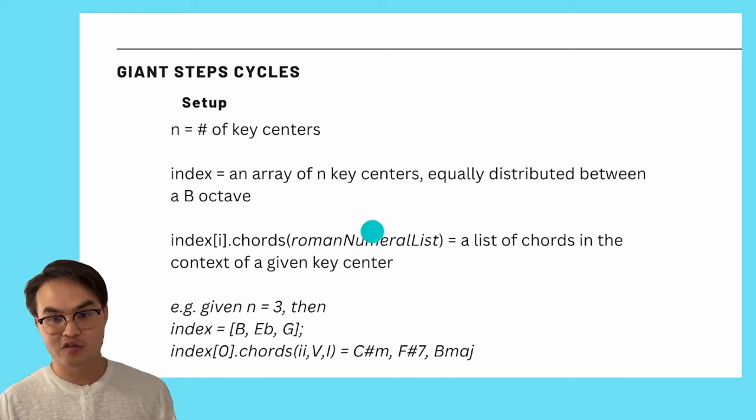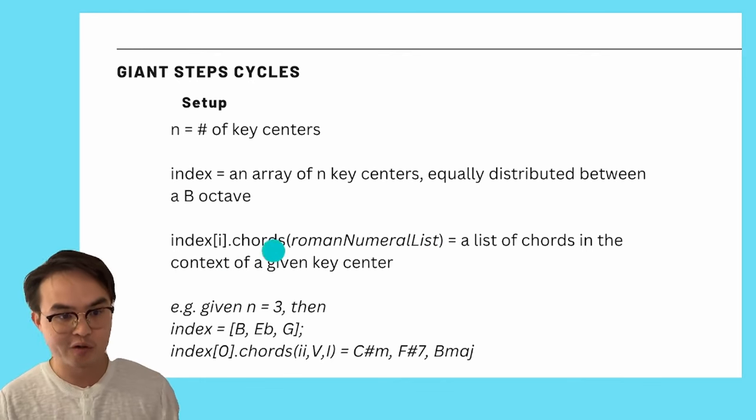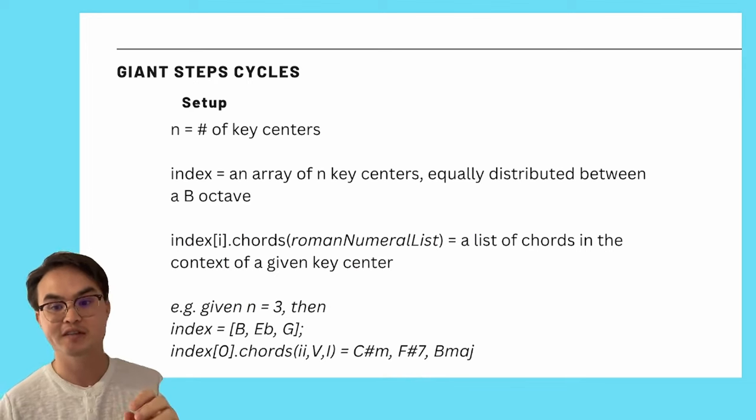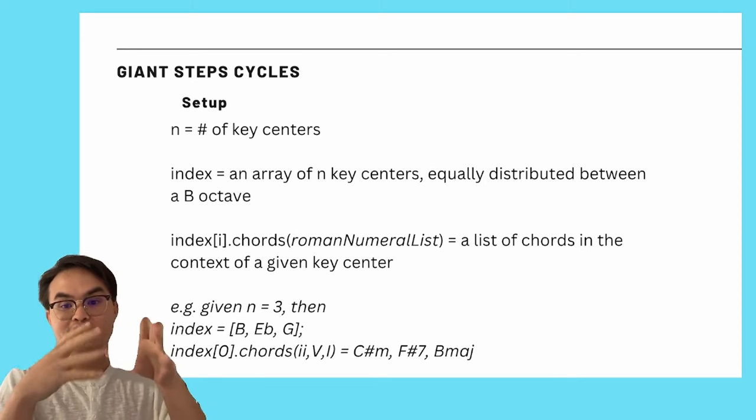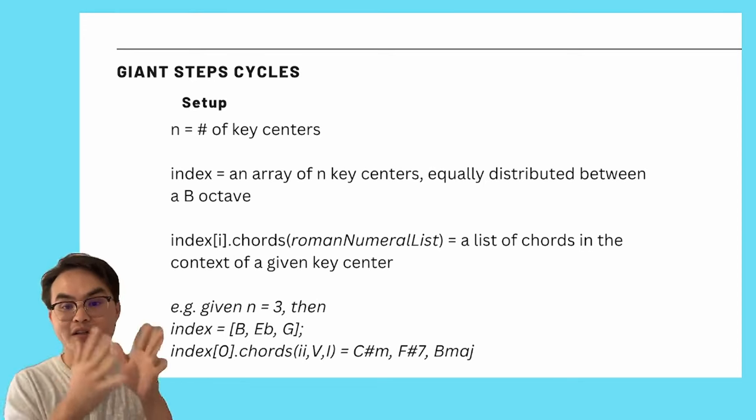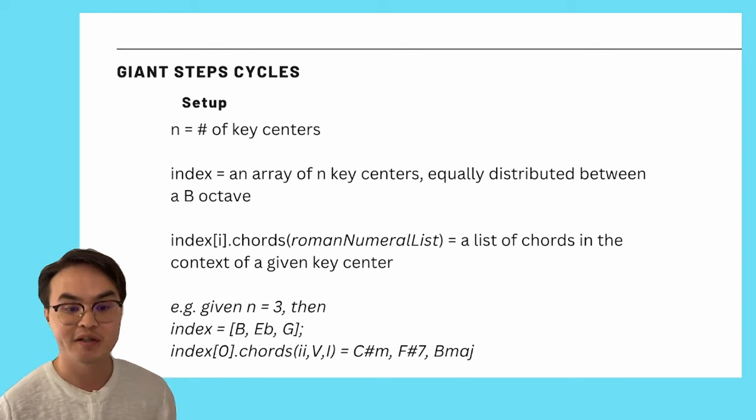And then I made a little pseudocode way of saying that we can put in Roman numerals to say it's not just the chord B, the chord G, the chord E flat, but it's the two, five, one of B, the two, five, one of E flat, so on and so forth.